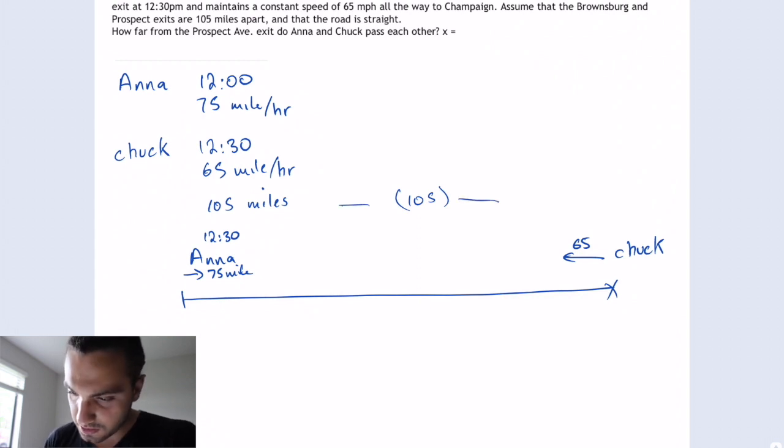So to make the time the same for both of them, actually it's the opposite. Anna starts at 12 and Chuck at 12:30. So to make this time the same and compare to each other, we just let Anna go 30 minutes and then this way both of them will be starting at the same time. So we'll let Anna go by for another 30 minutes.